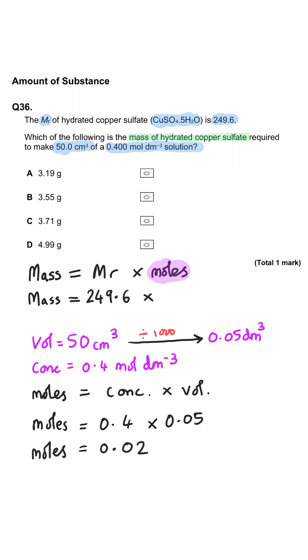Mass is MR times moles, so 249.6 times by 0.02, which gets us 4.99 grams. And so D is the correct answer.